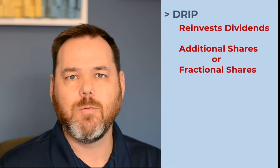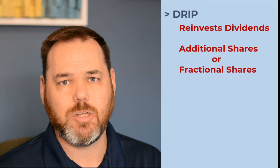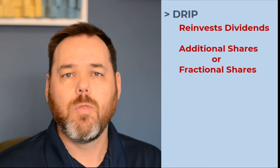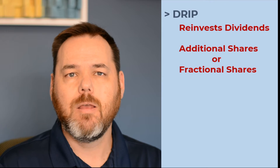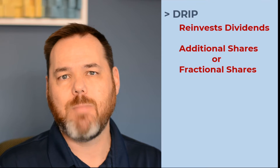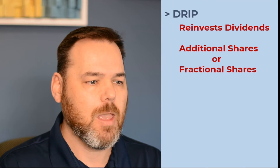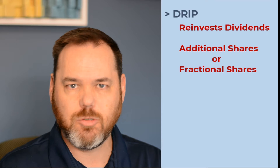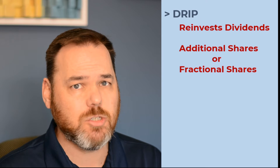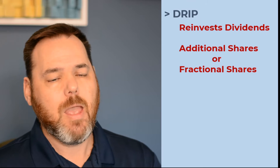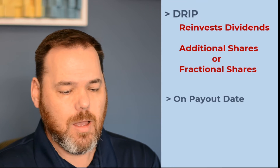Let's say you own a stock with a quarterly dividend that paid out yesterday and it was two dollars, but the stock is trading at twenty dollars a share. You can't buy a full additional share, so it will automatically buy fractional shares. Those fractional shares build up to whole shares, and you still get paid dividends on the fractional shares.